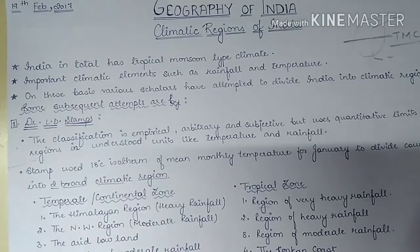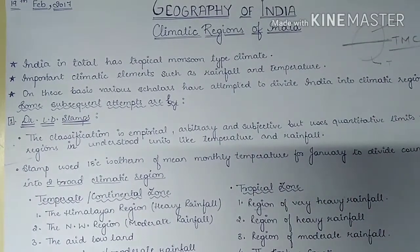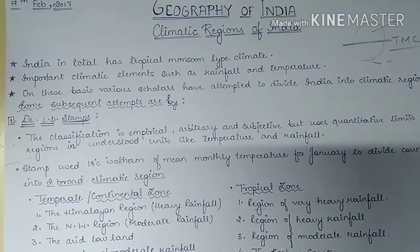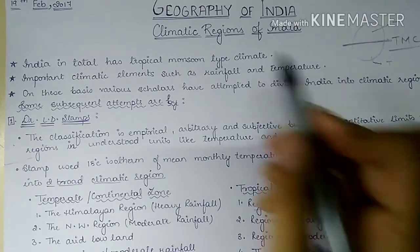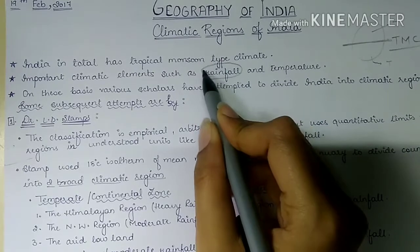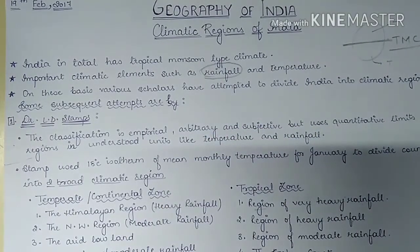The classification of Indian climate is based on two climatic elements: rainfall and temperature. Out of these, rainfall is the most prominent one. The distribution of rainfall in different regions is the primary basis for classification of the climatic regions of India, along with temperature.